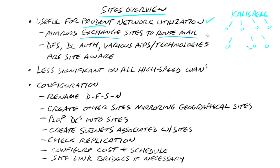You're going to use those sites to route the mail. Other things can use this as well, such as System Center Configuration Manager, DFS, and Domain Controller Authentication — all of that can be site-aware. For example, I don't want to be a user in Phoenix and end up logging on to a domain controller in Singapore. That's going to happen if I don't have prudent site layout. Various applications, like SCCM and other third parties, are site-aware and will make prudent use of your network utilization based upon the sites.